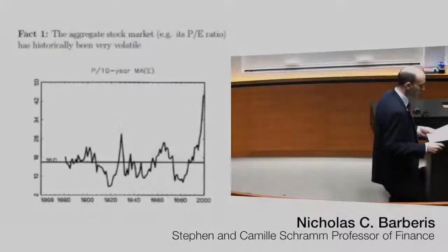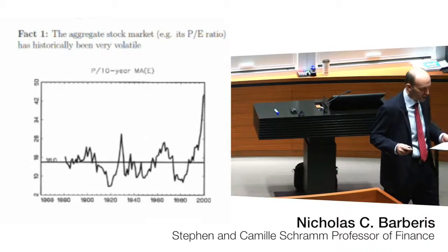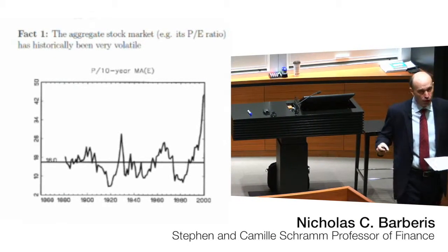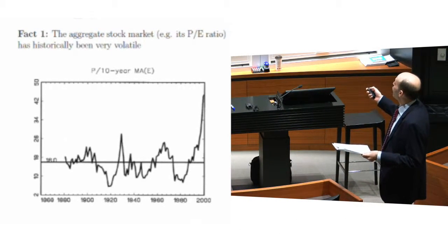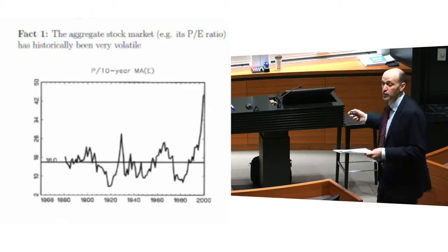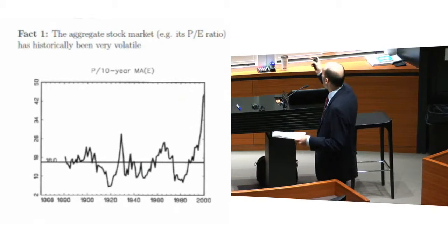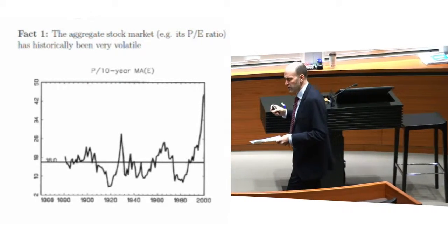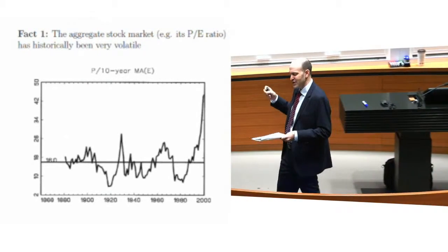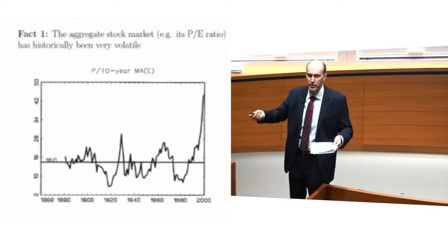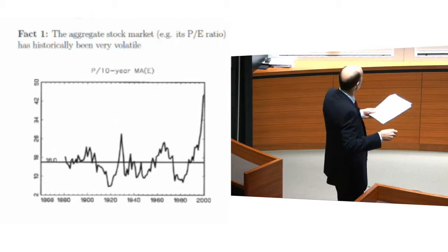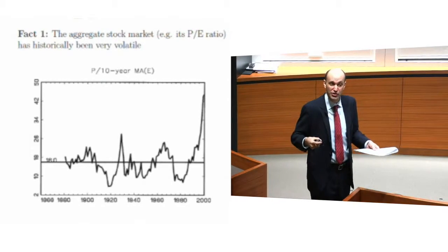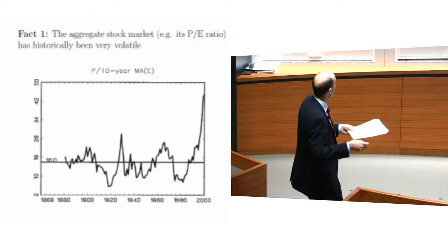The aggregate stock market, for example its price-to-earnings ratio, has historically been very volatile. This is a plot of the stock market's price-to-earnings ratio over the past century. Specifically, it's a ratio of the price to the average of the previous ten years' earnings. And you can see big fluctuations in this ratio over time.